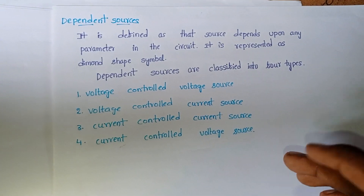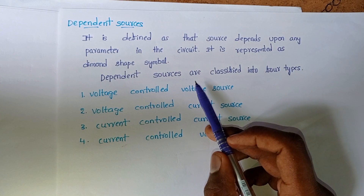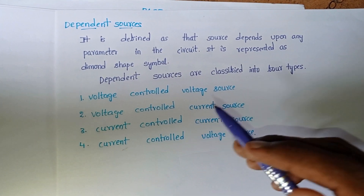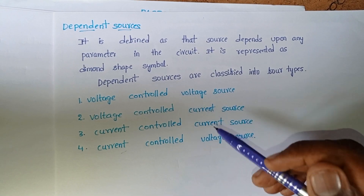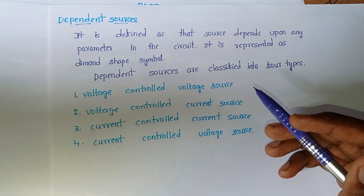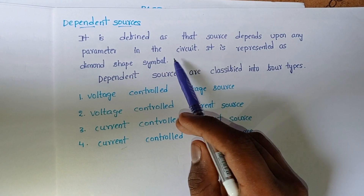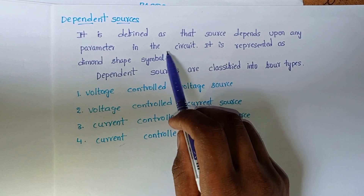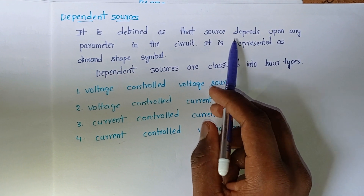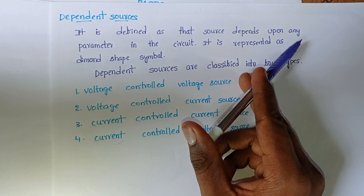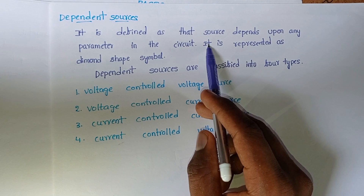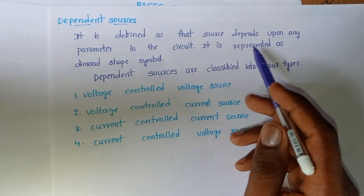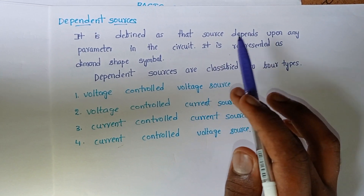Now let's discuss dependent sources. Independent sources are the sources which do not depend on the parameters of the circuit. Dependent sources are the reverse of independent sources — a dependent source is defined as a source that depends upon some parameter in the circuit. It is represented using a diamond shape symbol.